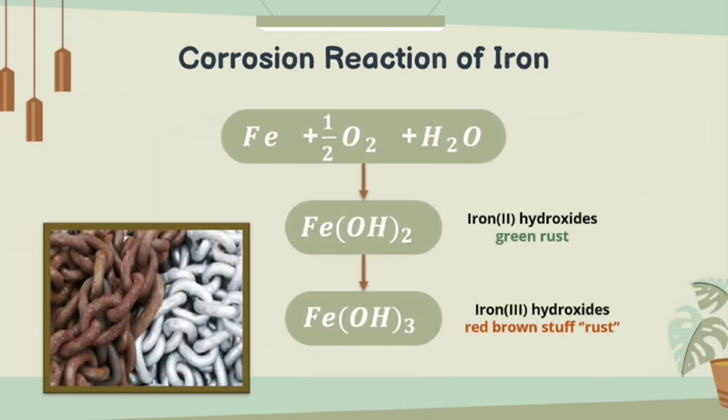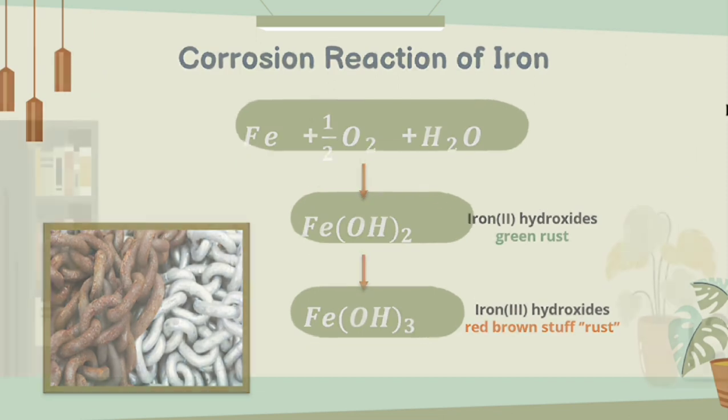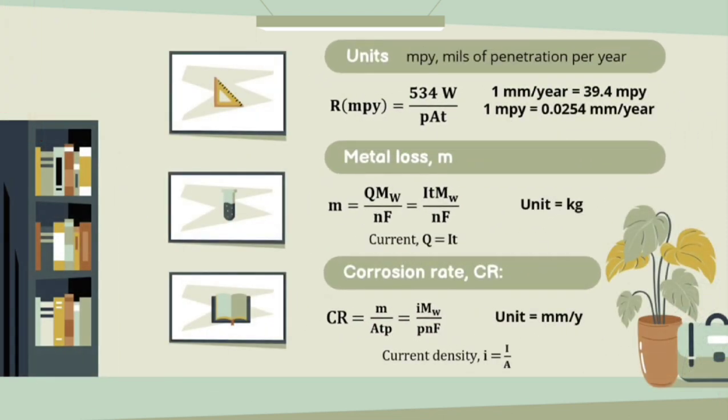Here we can see the flow of the corrosion reaction of iron that occurs. The unit for corrosion rate is mils of penetration per year, and this is the formula used to do the calculation of metal loss and corrosion rate.